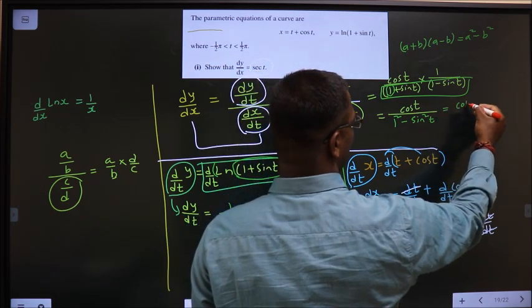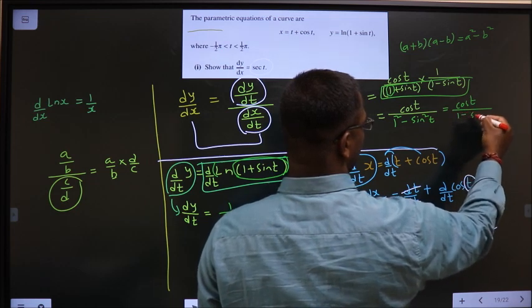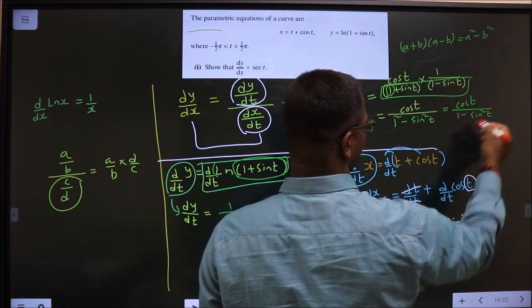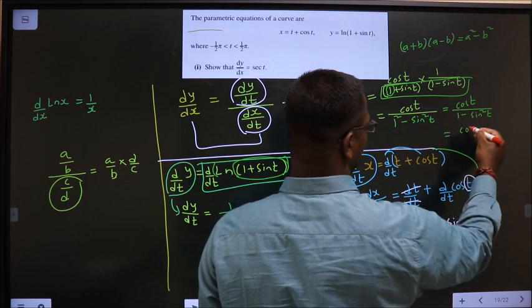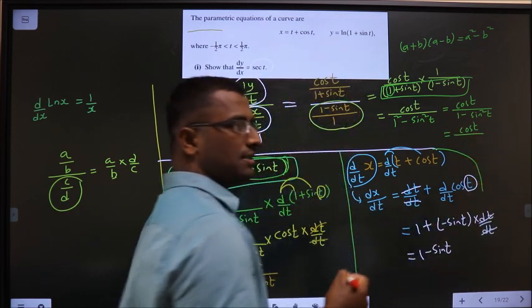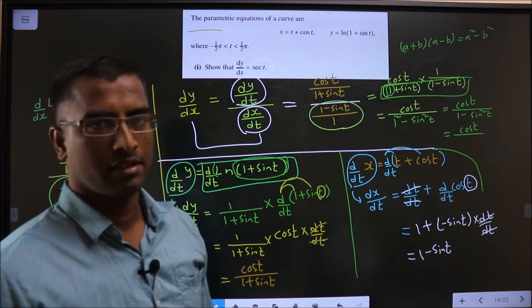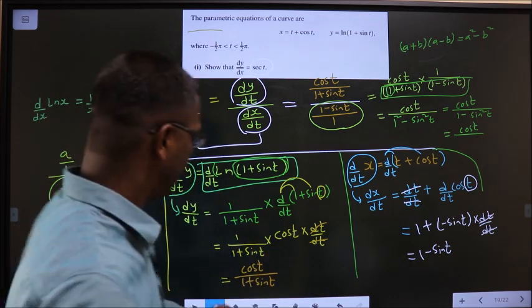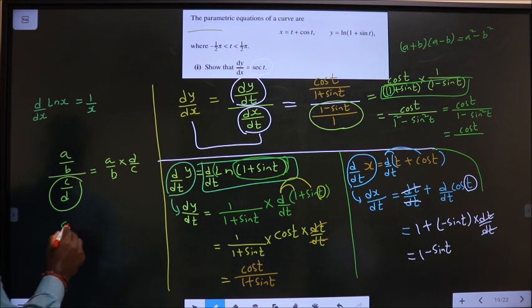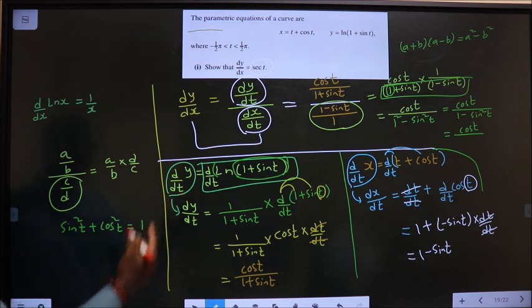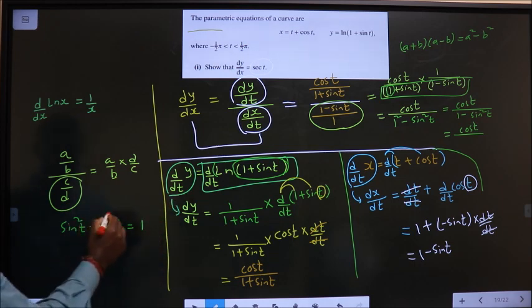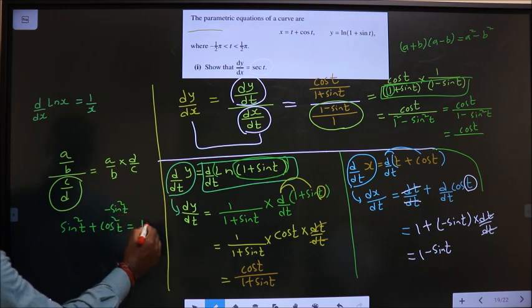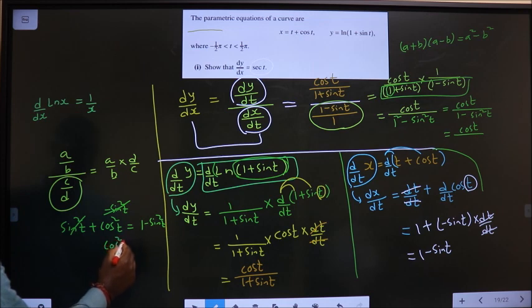That is equal to cos t by 1 square is 1, 1 minus sin square t. That is equal to cos t by 1 minus sin square t is how much? Cos square t. Basic trigonometry identity. Sin square t plus cos square t is equal to 1. You want 1 minus sin square. So subtract sin square on both sides. So this gets cancelled. You get cos square t equal to 1 minus sin square t.